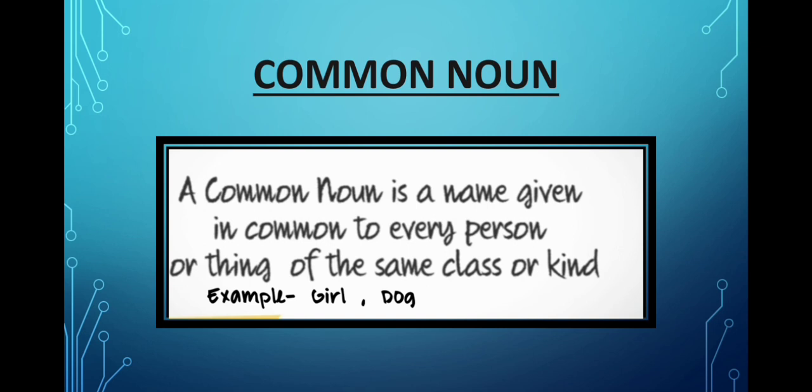What are common nouns? A common noun is a name given in common to every person or thing of the same class or kind. Example, girl and dog. General name of a person, place, animal or thing is a common noun. Or we can say that common noun is a word to identify a class of people, places, things or animals. Like, girl is a common noun, as girl can be any girl without being a specific name. Dog, this is also a common noun, as dog can be any dog without a specific name.